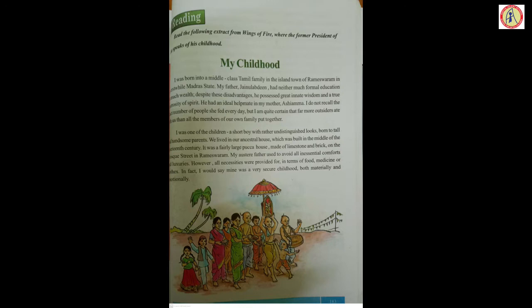'I was one of the children — a short boy with rather undistinguished looks, born to tall and handsome parents. We lived in our ancestral house, which was built in the middle of the 19th century. It was a fairly large paka house made of limestone and brick on the Mosque Street in Rameswaram. My austere father used to avoid all inessential comforts and luxuries. However, all necessities were provided for in terms of food, medicine or clothes. I would say mine was a very secure childhood, both materially and emotionally.'